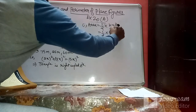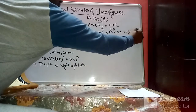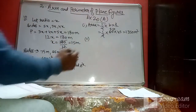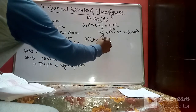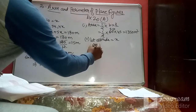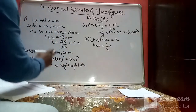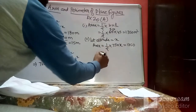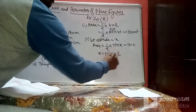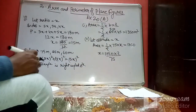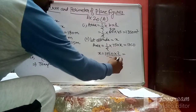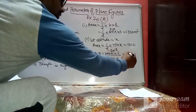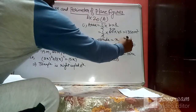For part two, we find the altitude corresponding to the largest side. Let altitude = x. Using area: ½ × 75 × x = 1350, so x = (1350 × 2) / 75 = 36 meters. The altitude to the largest side is 36 meters.